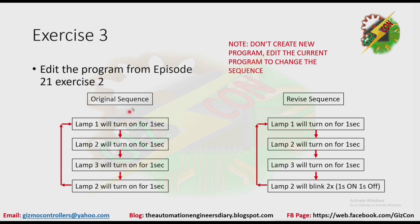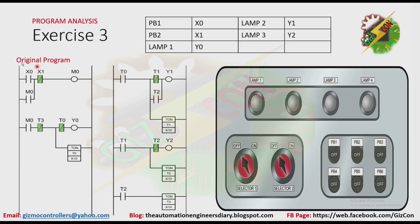Exercise 3: edit a program from Episode 21 Exercise 2. This is the sequence from our last tutorial — we need to edit this sequence. As you can see here, the sequence is almost the same. The only difference is that instead of turning on Lamp 1 once and going back, Lamp 2 needs to blink twice before it goes back. Now let's review our last program — this is the original program, and here we have our program analysis.